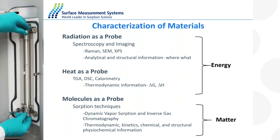The sort of information you can get by using a molecule includes thermodynamic information, kinetics, and chemical or physiochemical information. The fundamental difference is we're using matter to interrogate the material rather than energy. For example, if you're interested in the solubility of a molecule in a solvent, the dispersibility, how a molecule actually dissolves — those phenomena depend on molecular interactions. So if you're interested in physiochemical properties like dissolution, adhesion, or aggregation, using a molecule as a probe is the naturally relevant approach.